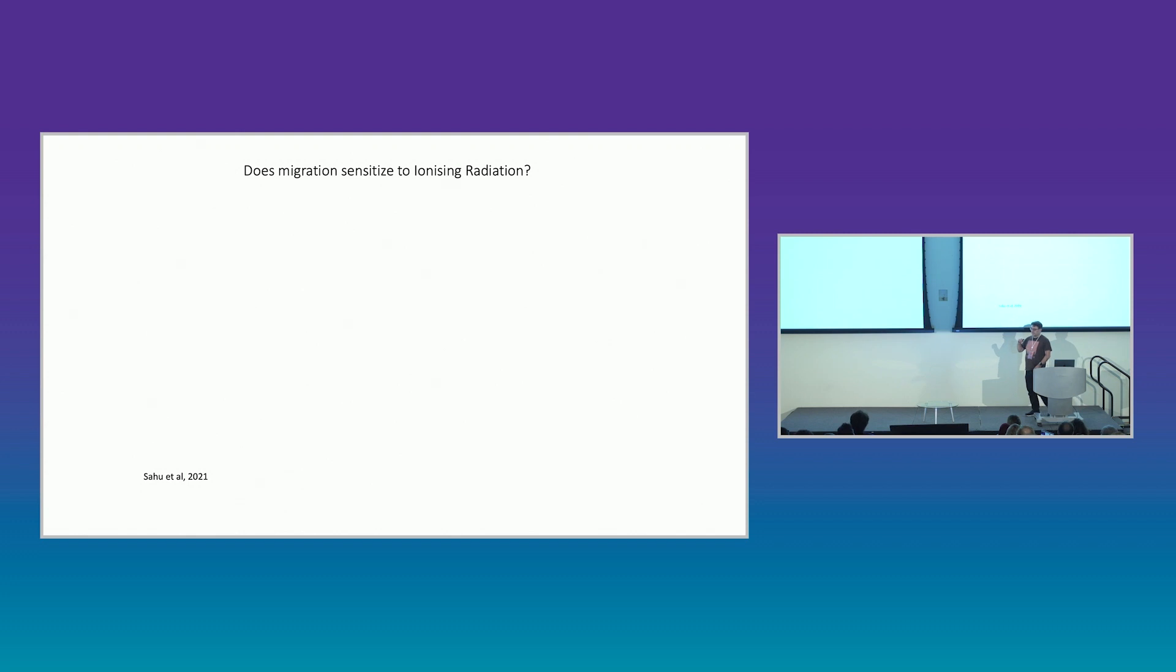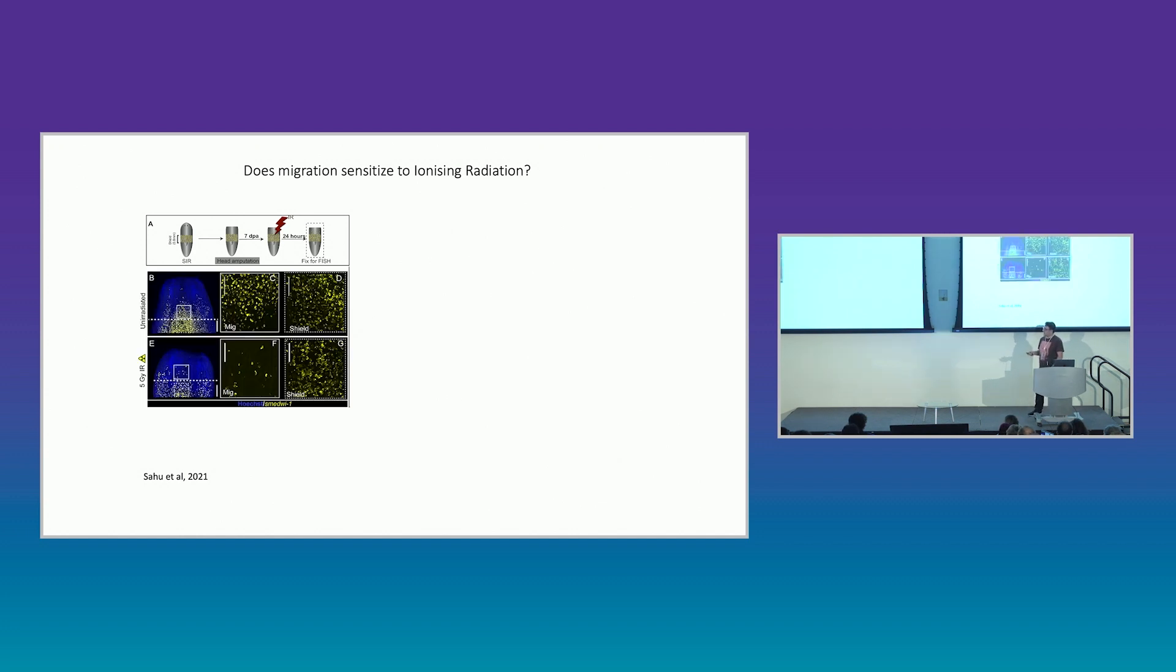Then we ask, if the DNA damage itself is important, then it should sensitize cells for further damage if it's a load on the system. And to do this, we reversed the time of the experiment. So now we ask stem cells to migrate to a wound. But now we added radiation on top to see if the migrating cells are more or less sensitive. And this is what we saw. So here you can see in the unirradiated control, normal stem cell migration towards the wound at seven days. If we then look at the situation when we added 5 gray, you can see that all those cells in the shield are depleted by 5 gray to a much lesser extent than in the migratory region where the cells are completely gone. So this suggests to us that this is a real problem. This damage is actually significant. It's not something that can be ignored.